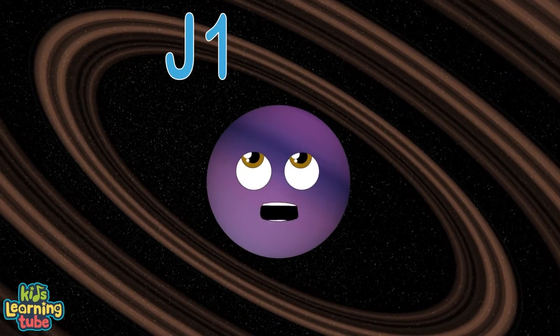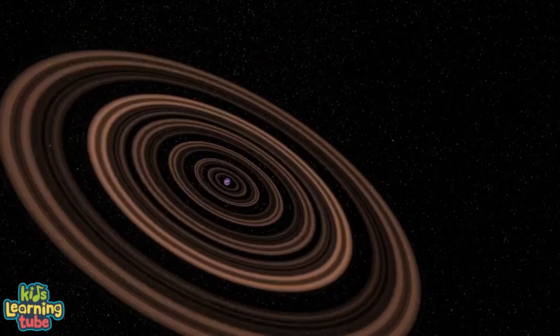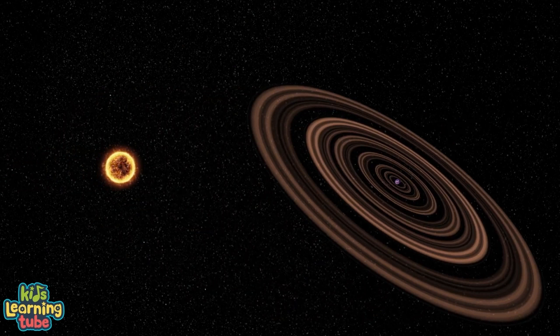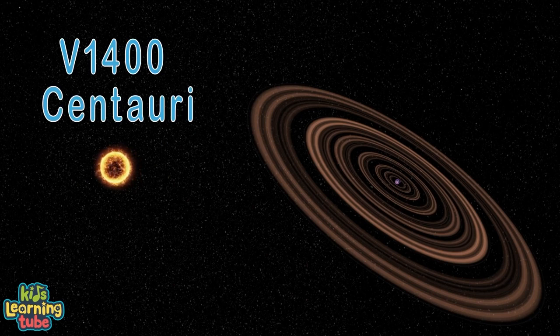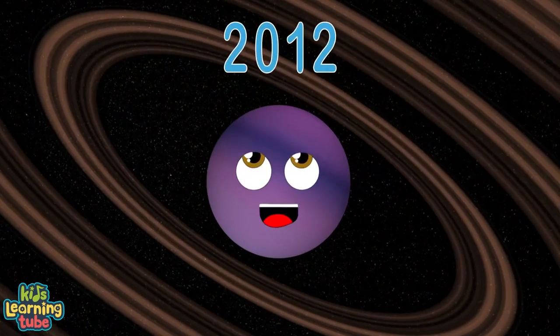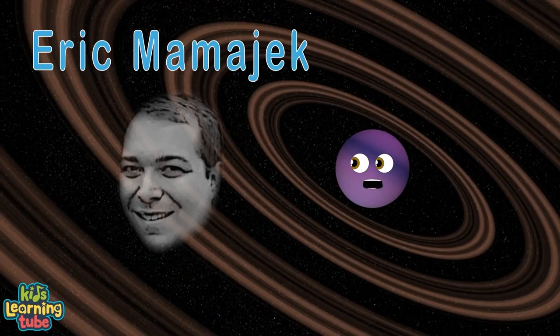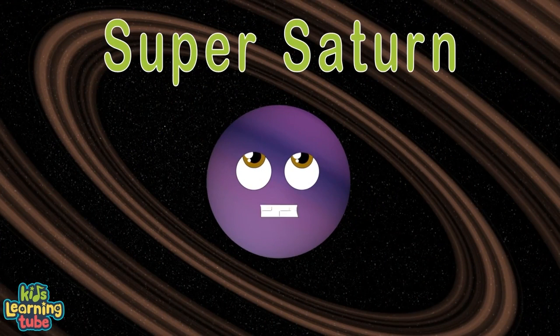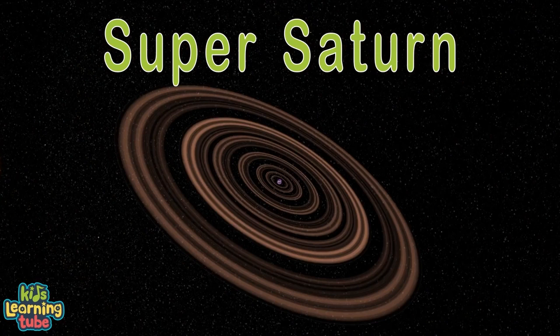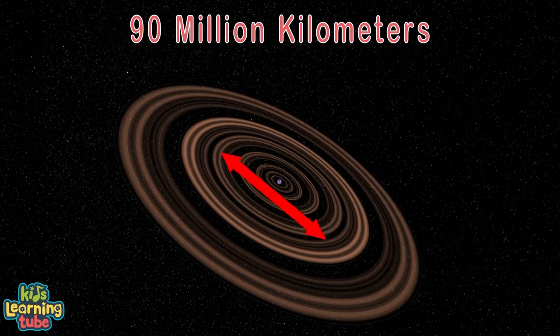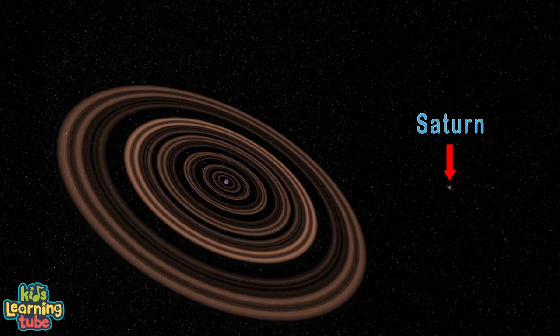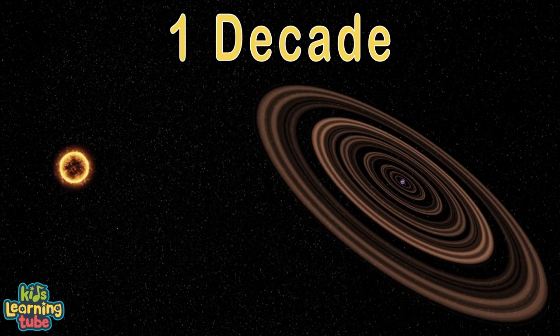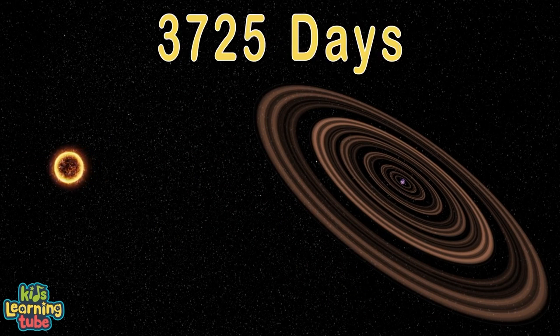My name is J1407B. I have a ring system bigger than Saturn. I orbit a young star, and we can all agree its name is V1400 Centauri. In 2012, when I was discovered by Eric Mamajek at the University of Rochester, I earned the name of Super Saturn because of my ring system of circumplanetary rings. 90 million kilometers is the radius of my rings. That's about 200 times the size of Saturn's rings, which makes me the king. When I orbit my sun, it takes about a decade, which is estimated at about 3,725 days.